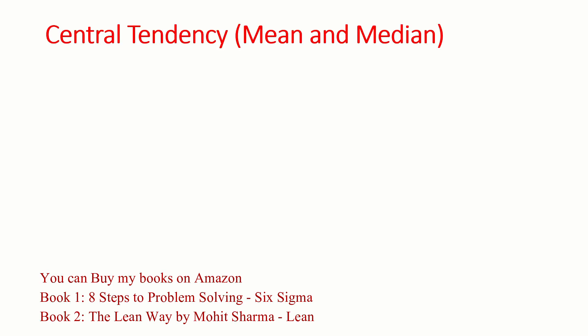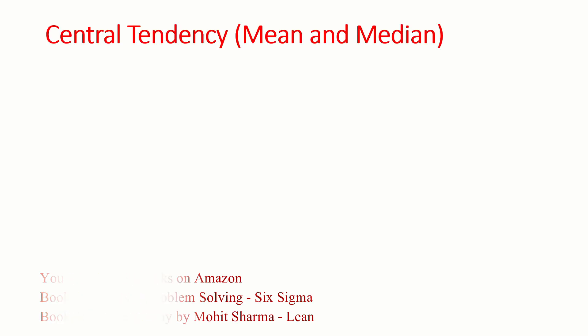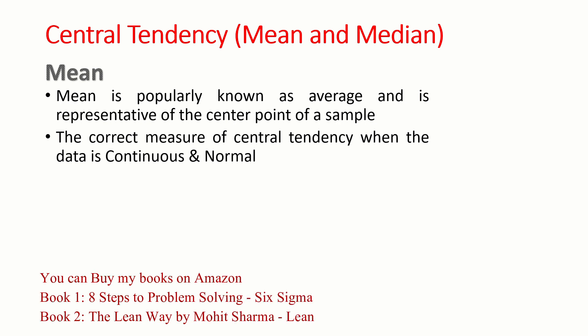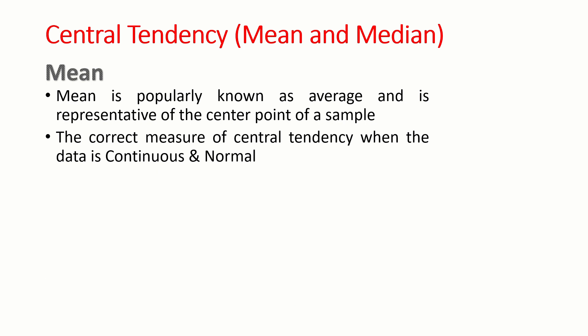Our central tendency of data can be measured by mean or median. The definition of mean is: mean is popularly known as an average and is representative of the center point of a sample. It is the correct measure of central tendency when the data is continuous and normal. I will also talk about how to find out the normality of the data.